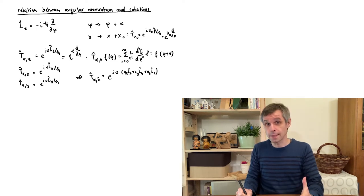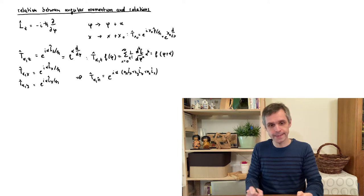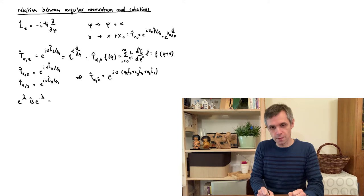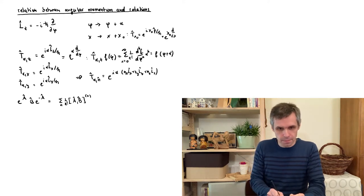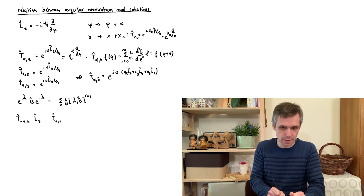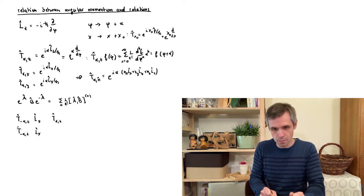We have some practice with this already from the case of linear translations, where we exploited a very general relation involving nested commutators. Now we repeat this for rotations, starting with the simplest case: a rotation about the z-axis. We look at the effect of this rotation on all three angular momentum components, starting with the simplest one — the component Lz itself.